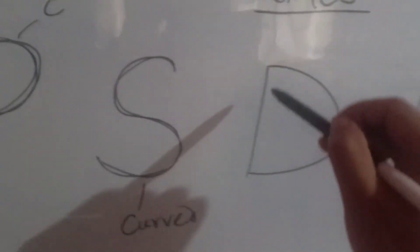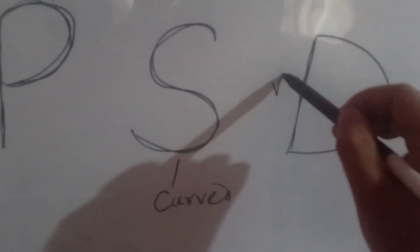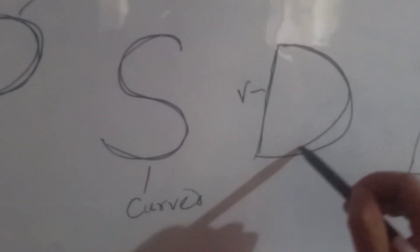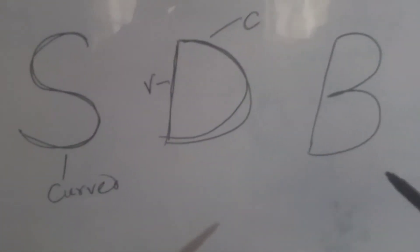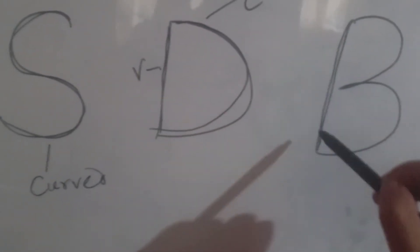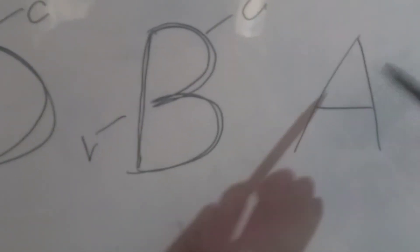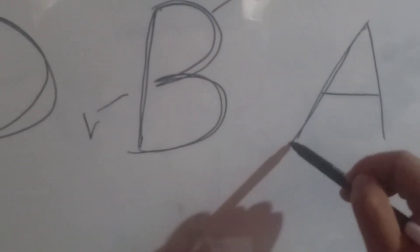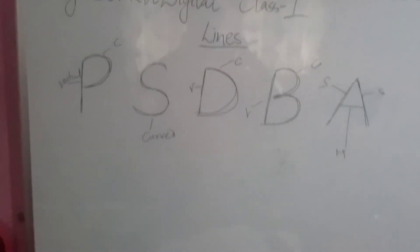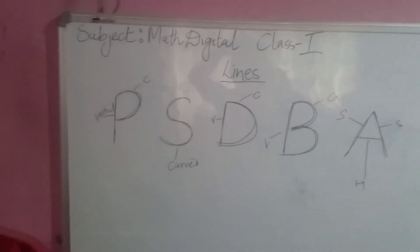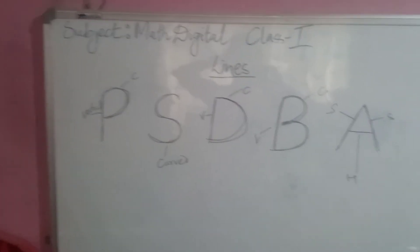Similarly, in letters D and B there is a vertical line and a curve. In the letter A you will find slant lines and a horizontal line. So lines are not only used to make shapes but they are also used in letters.